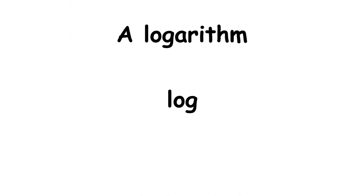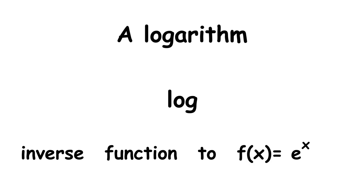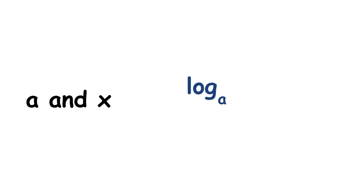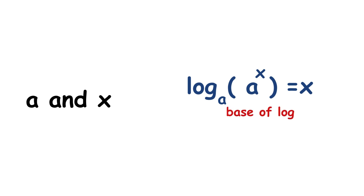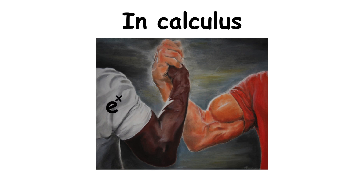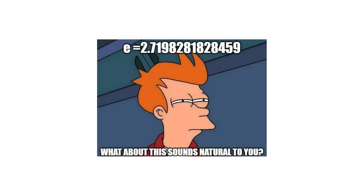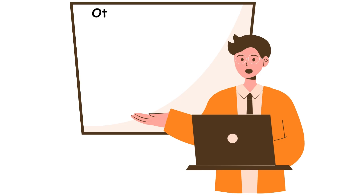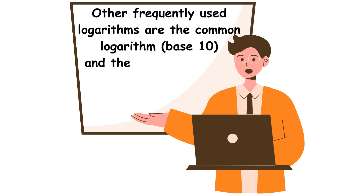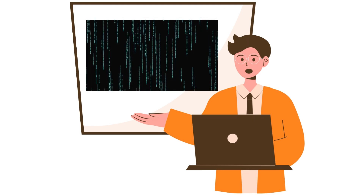A logarithm, denoted log, is an inverse function to an exponential function. For any appropriate a and x, log base a of a to the power of x equals x, where a is called the base of the logarithm. In calculus, the most important logarithmic function is the logarithm with base e, called the natural logarithm and usually denoted ln. Other frequently used logarithms are the common logarithm (base 10) and the binary logarithm (base 2), with the latter being common in computer science.